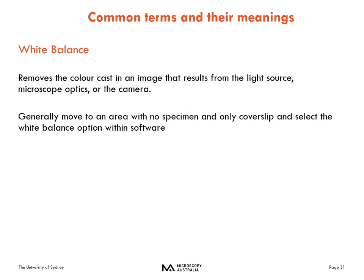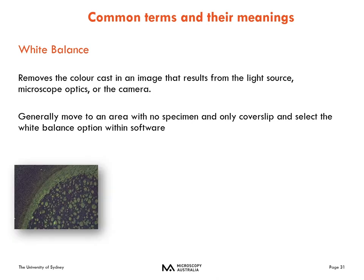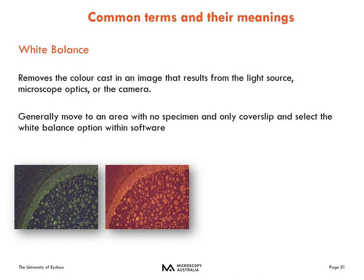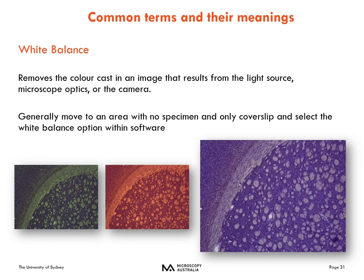Another technique you'll have to apply when using bright field imaging is white balance. This removes the colour cast into the image resulting from the light source, improper washing, microscope optics, or the camera. Generally you'll move to an area with no specimen and only the cover slip and select the white balance option within the software. This is important because you want to reflect the true colour of that sample. Here is an example — one image acquired without white balancing has a slightly blue-green cast and another has a more red pigmented cast. Once white balanced, these become a more accurate and true representation of the actual sample colours.